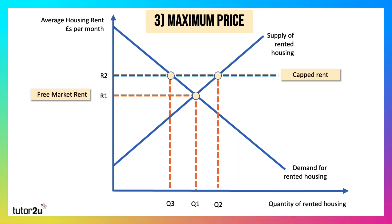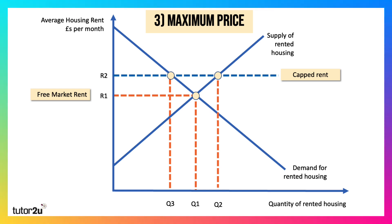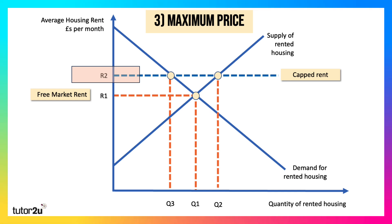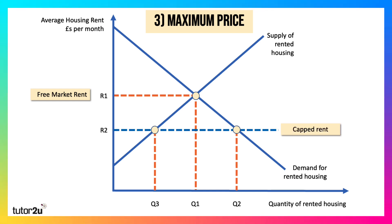Here's our third example: a maximum price — in this case where an authority introduces a rent cap, a cap on the cost of rented property. The key error here is that they've set the price too high. To be effective, a maximum price, a price ceiling, must be set below the normal equilibrium, the market rent. So it needs to be set at R2 in the market. You have to set the price below the equilibrium price; otherwise it would be ineffective.